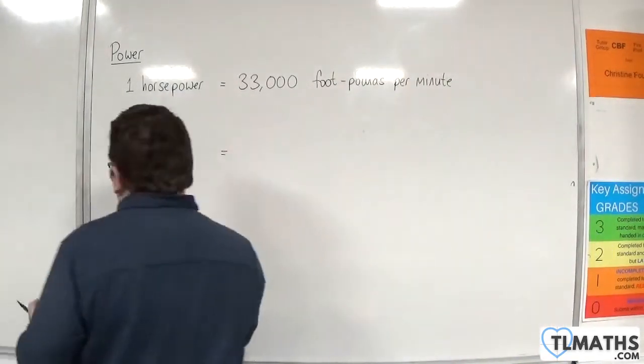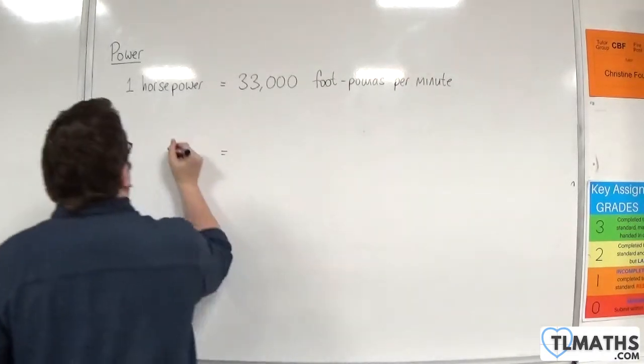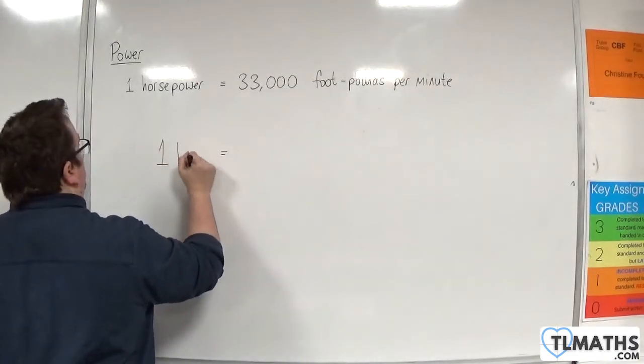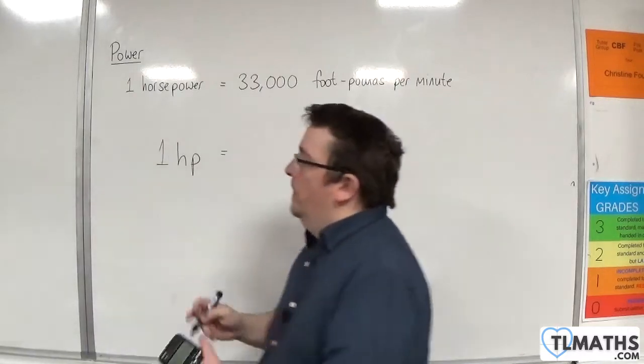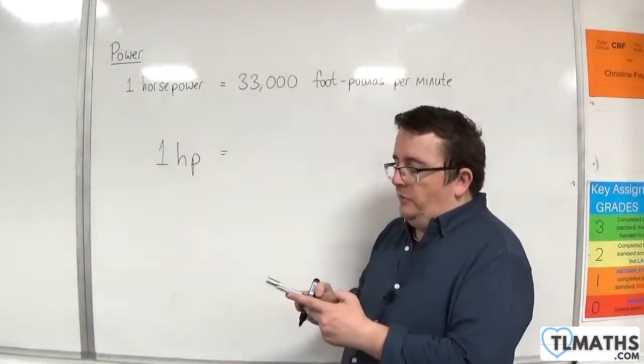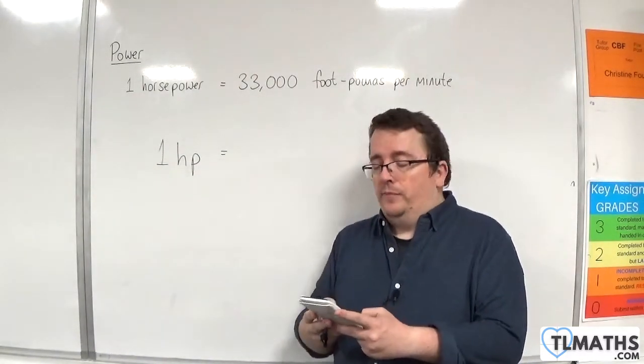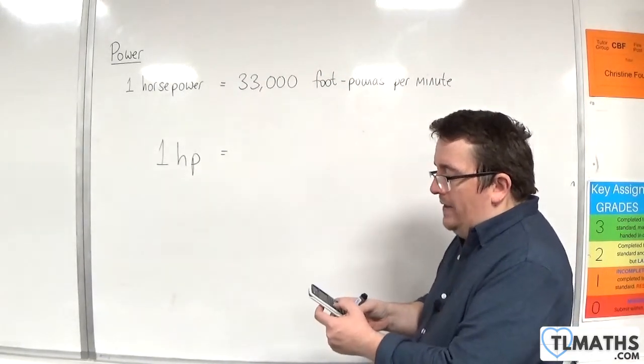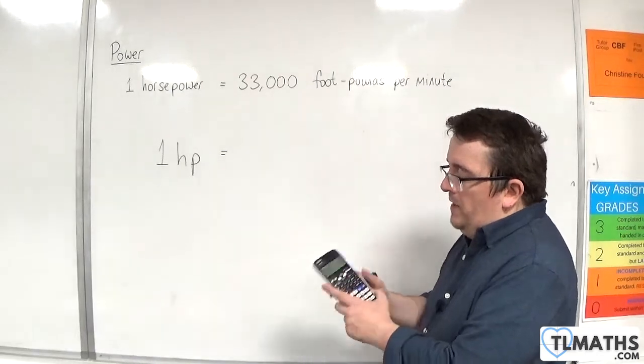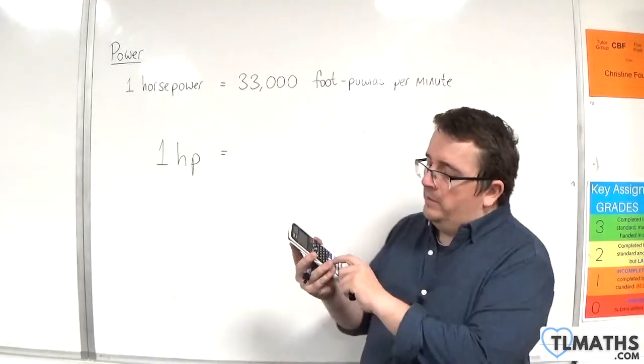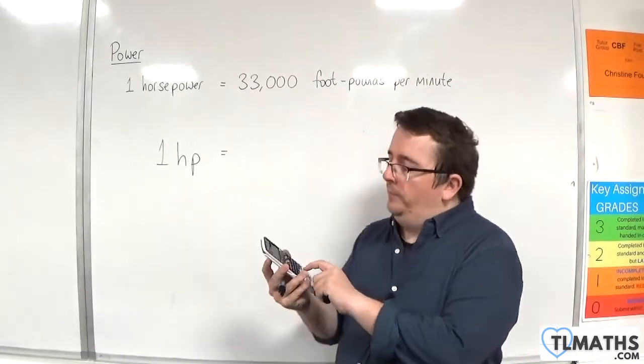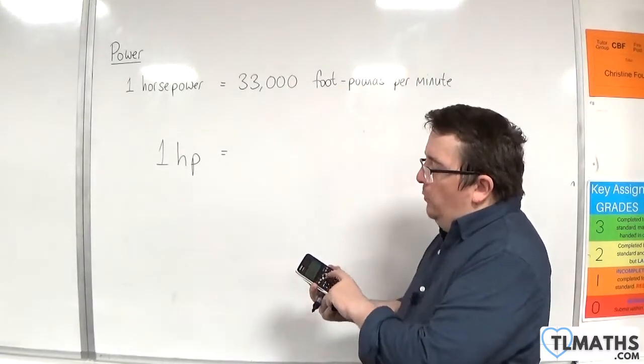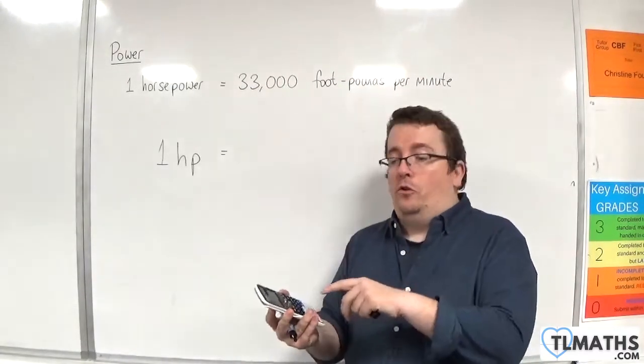What is one horsepower? Abbreviated to HP. So what I'm going to do is first of all press 1, and then press Shift and then number 8. You'll see above the number 8 on the ClassWiz there's CONV, conversions. And I'm going to scroll down until I get to number 4 for power.